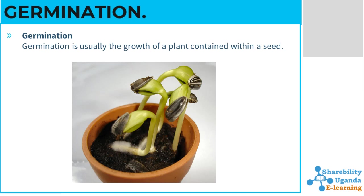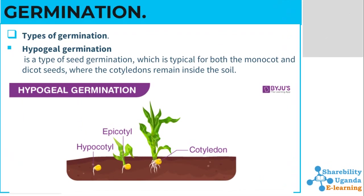What is germination? Basically, germination is the growth of a plant contained within a seed. When you dig a hole in the soil and put a seed — let's say a maize seed — and it grows, that is what we call germination. When you plant a bean seed you shall get beans; if we plant maize we shall get maize.